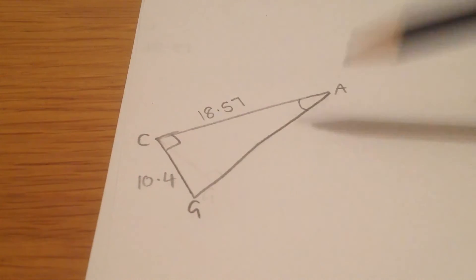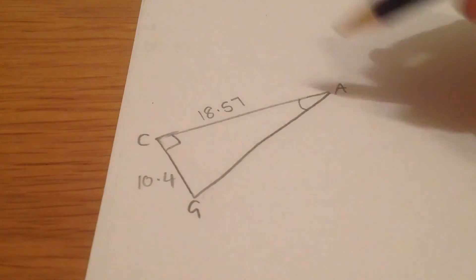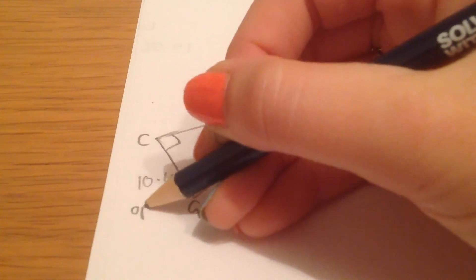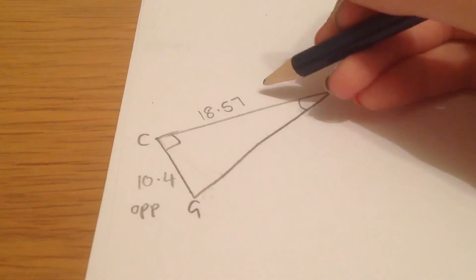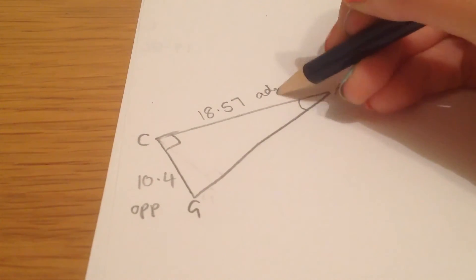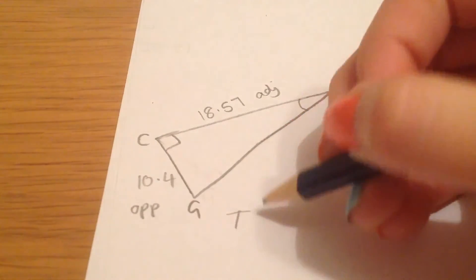Because we're trying to find an angle, we need to now use trigonometry. Labeling my sides, 10.4 is opposite, and 18.57 is the adjacent. O and A, we're using tan.